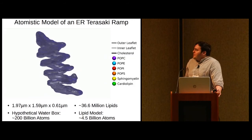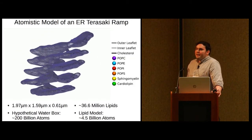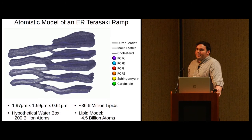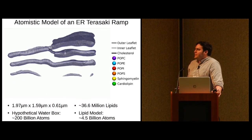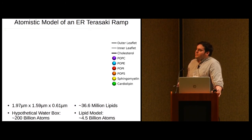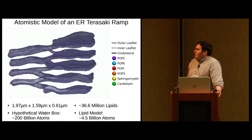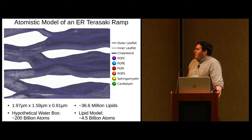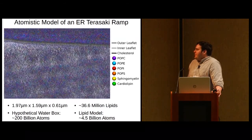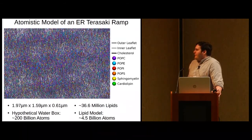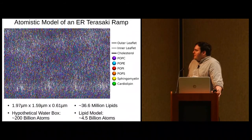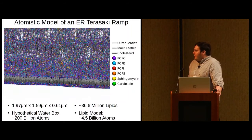So what this movie shows is a very preliminary model of the Terasaki ramp that was generated using only the first few most basic modeling steps involved in XMIS Builder. The model measures about two microns by a micron and a half by half a micron in size. It's composed entirely of lipids, about 37 million of them, which is about 4.5 billion atoms. If I were to solvate this system, it would contain about 200 billion atoms.